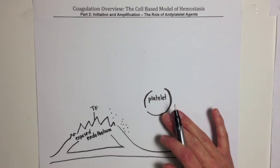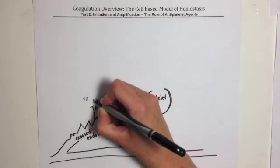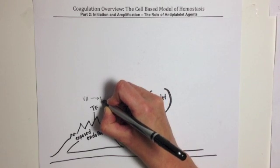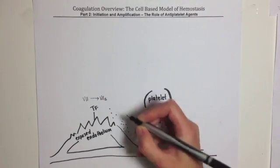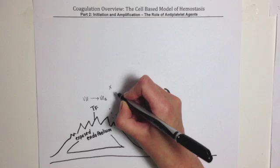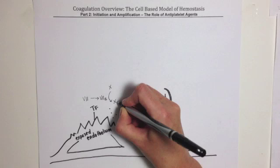The first step of the cell-based model of initiation: factor VII is converted to factor VIIa by the exposed tissue factor. VIIa then converts factor X to factor Xa.